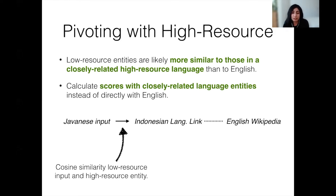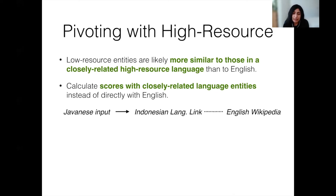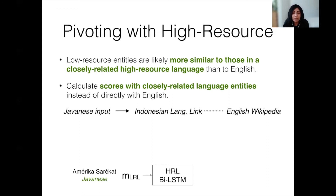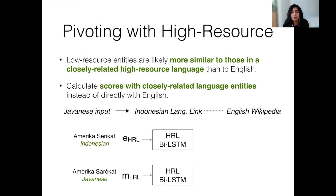For example, we can link input mentions in Javanese to Indonesian entities instead of linking them directly to English. As described earlier, we encode the input mention with the LSTM that is trained on the high-resource language using zero-shot transfer. We also use the same LSTM to encode the entity derived from the parallel language links in the high-resource language. Then we simply compute the cosine similarity between the two encoded vectors to get the pivoting similarity score.